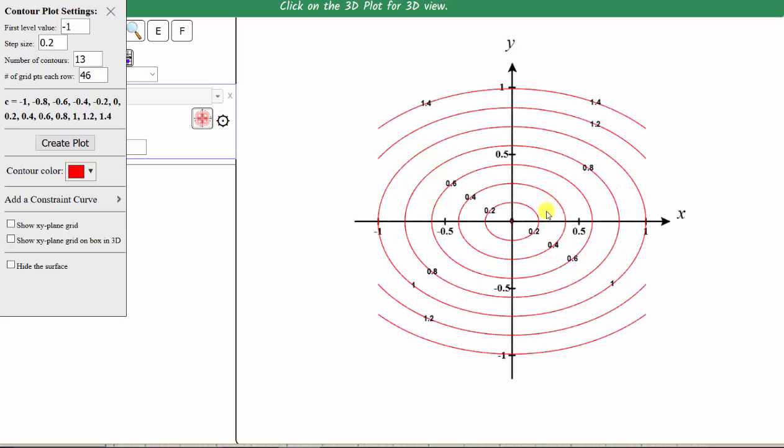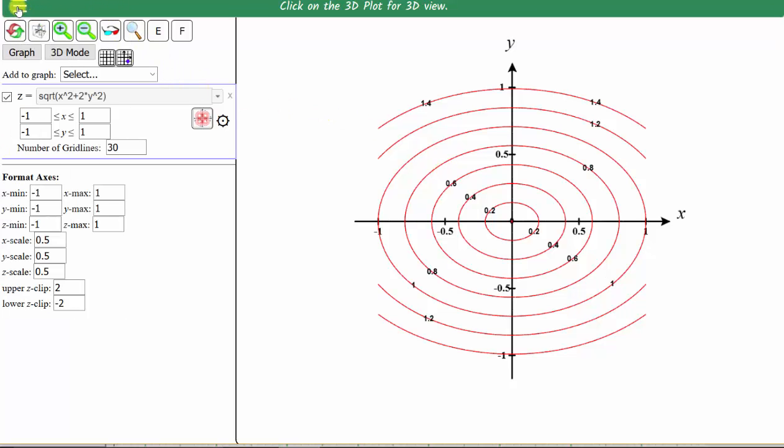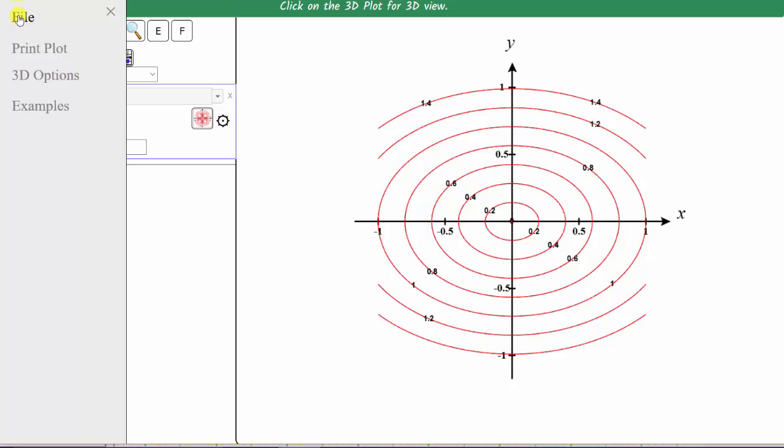If we wanted to save this plot, we can exit from here, click the three horizontal bars, click file, and click save the plot as png.